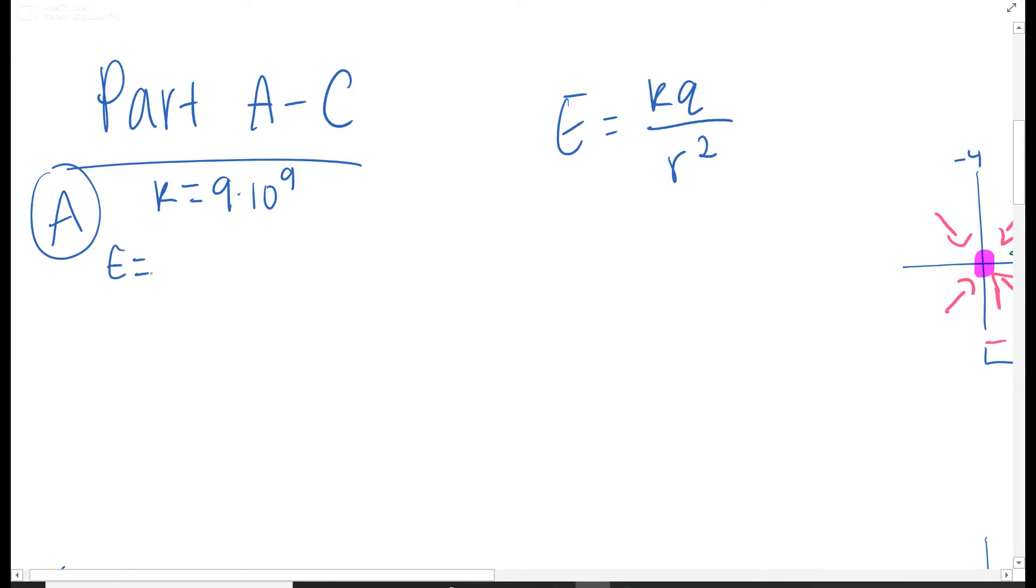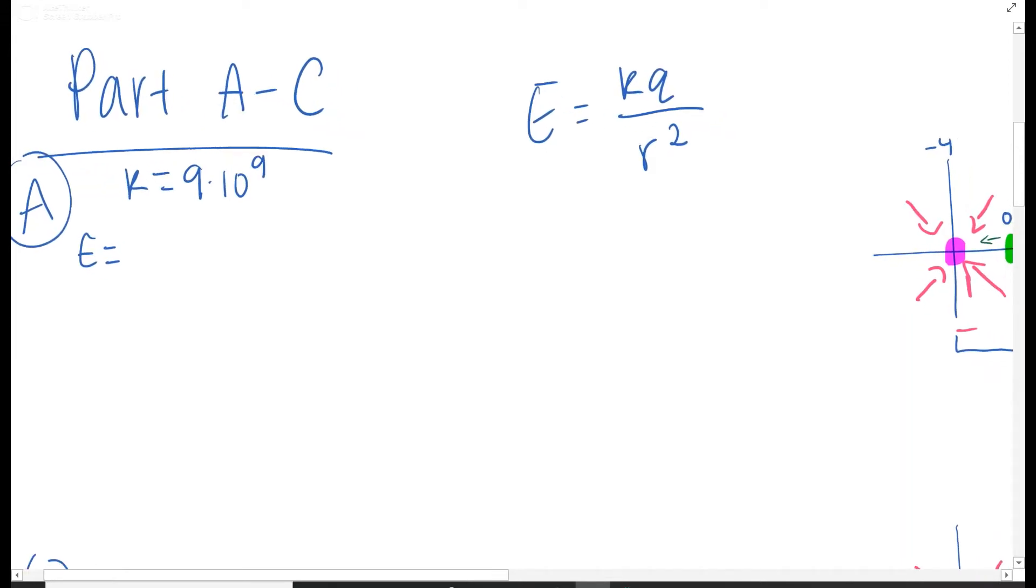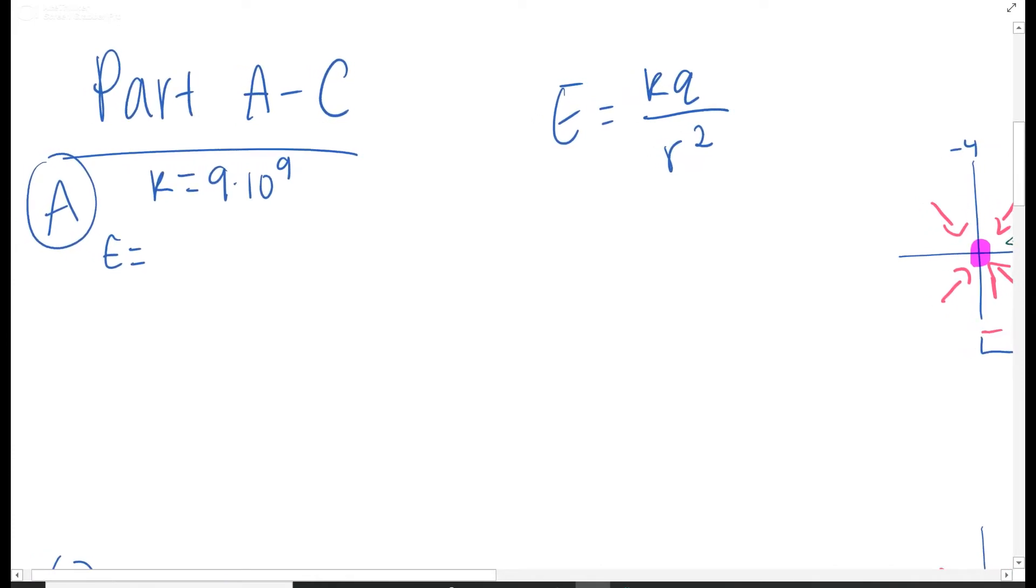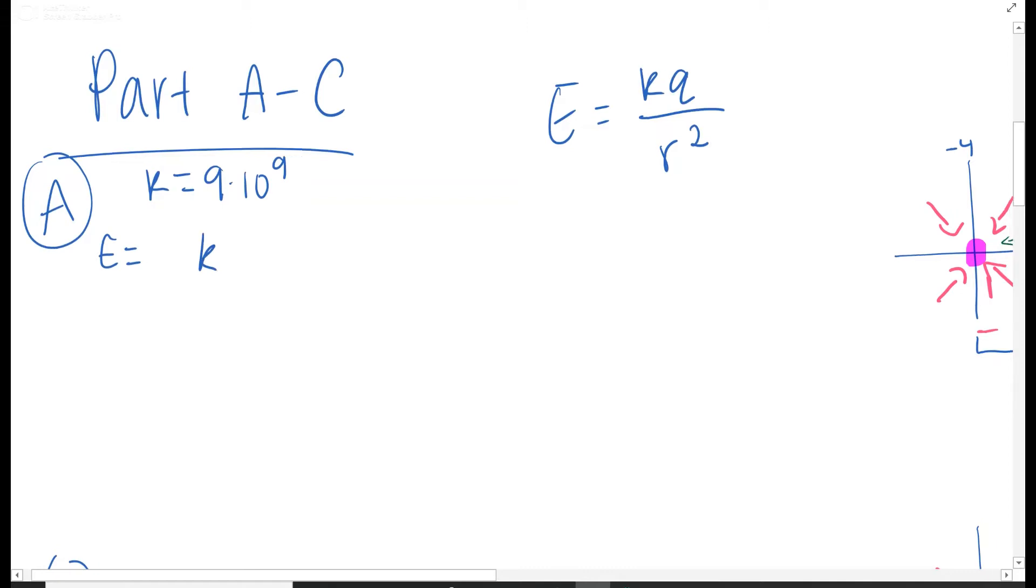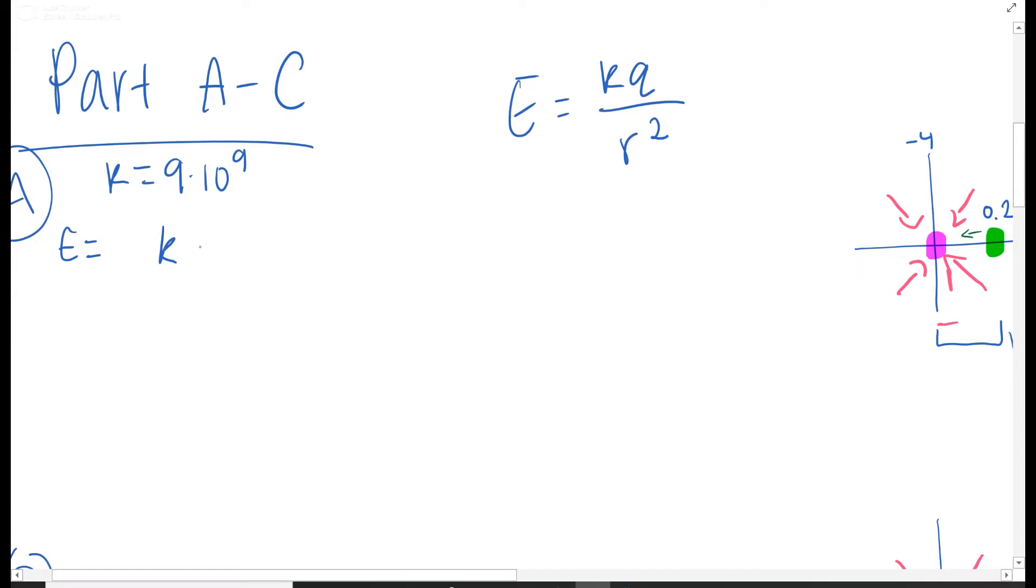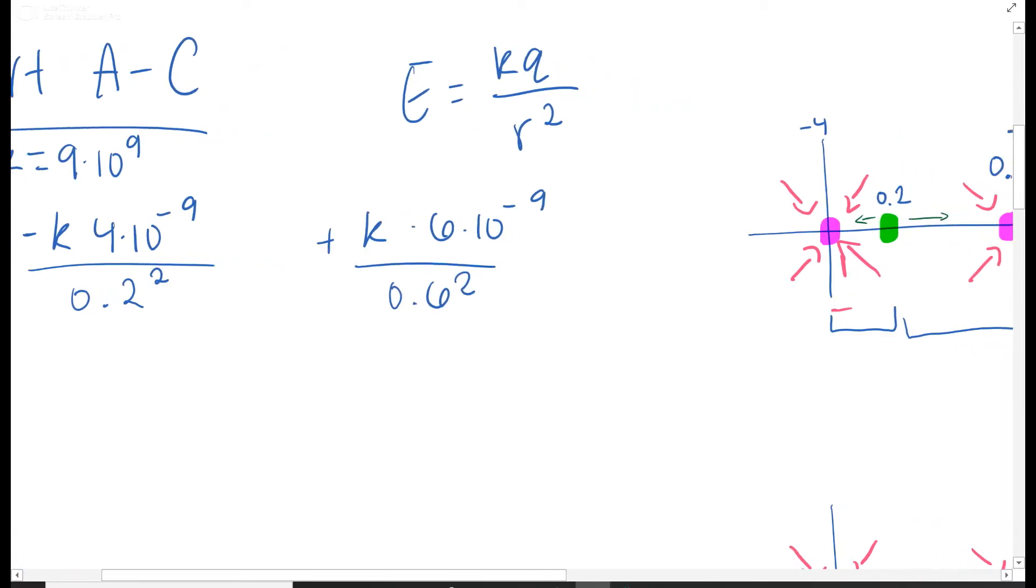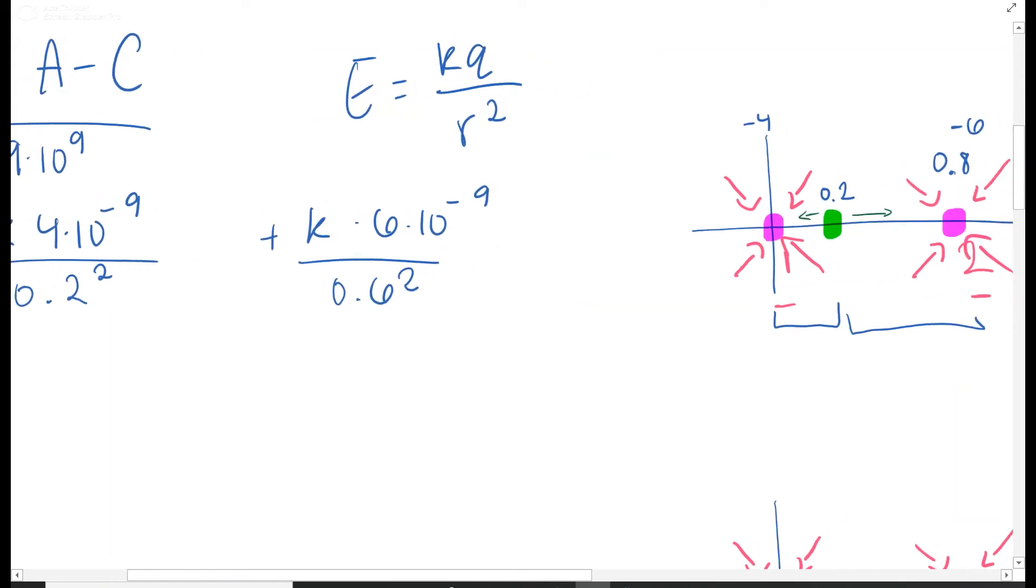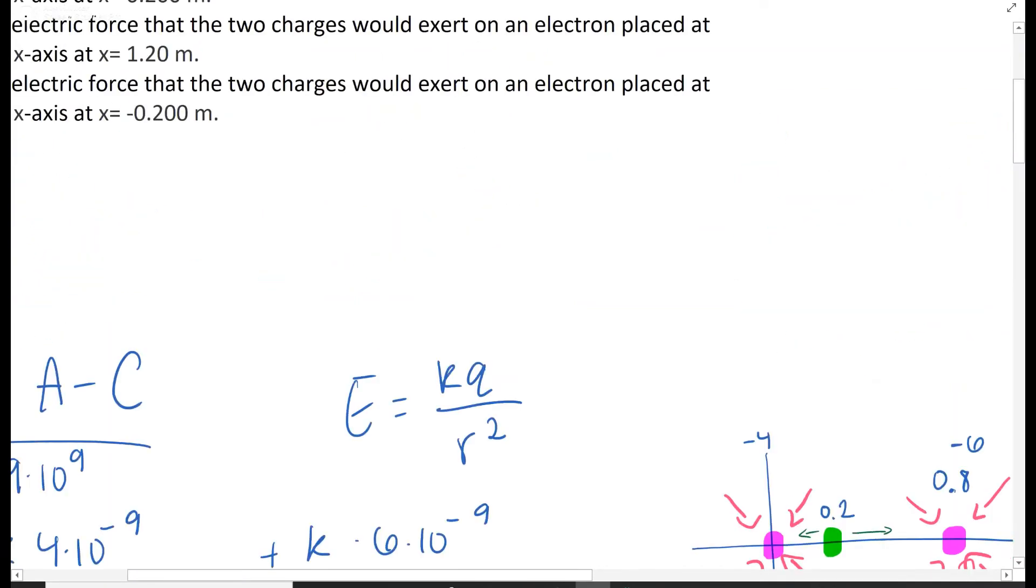So the electric field, let's do this. So K times Q of this first one, negative 4. So 4 times 10 to the negative 9, which is negative, and then it's about 0.2 squared. And then we're going to have this next value, this times 6 times 10 to the negative 9th, over 0.6 squared. So what we're getting these 0.2 and 0.6 is the distance. So 0.2 right here, and then 0.6 right here, it's 0.8 minus 0.2.